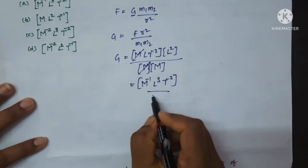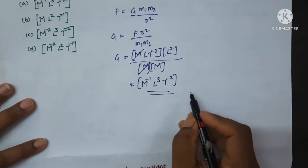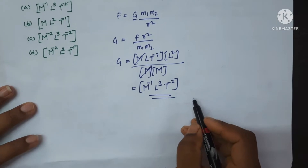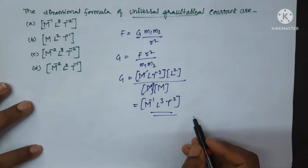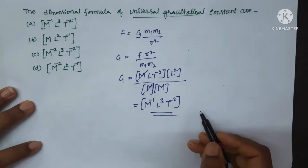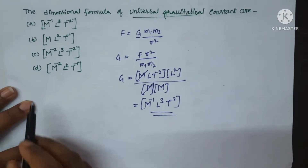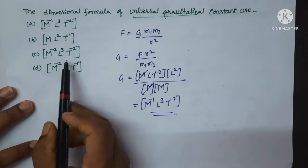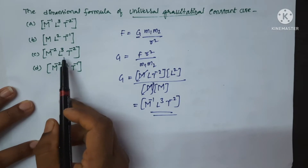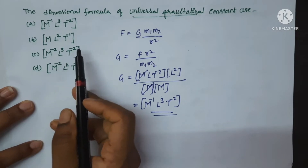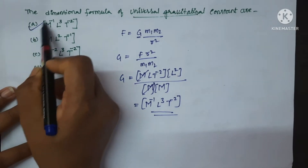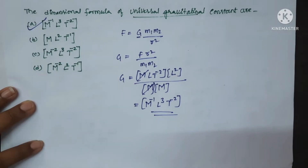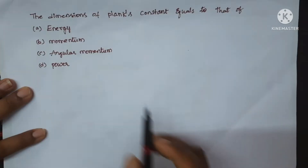This is the dimensional formula for universal gravitational constant: M power minus 1, L cube and T power minus 2. A is the correct option. Let's see the next question.